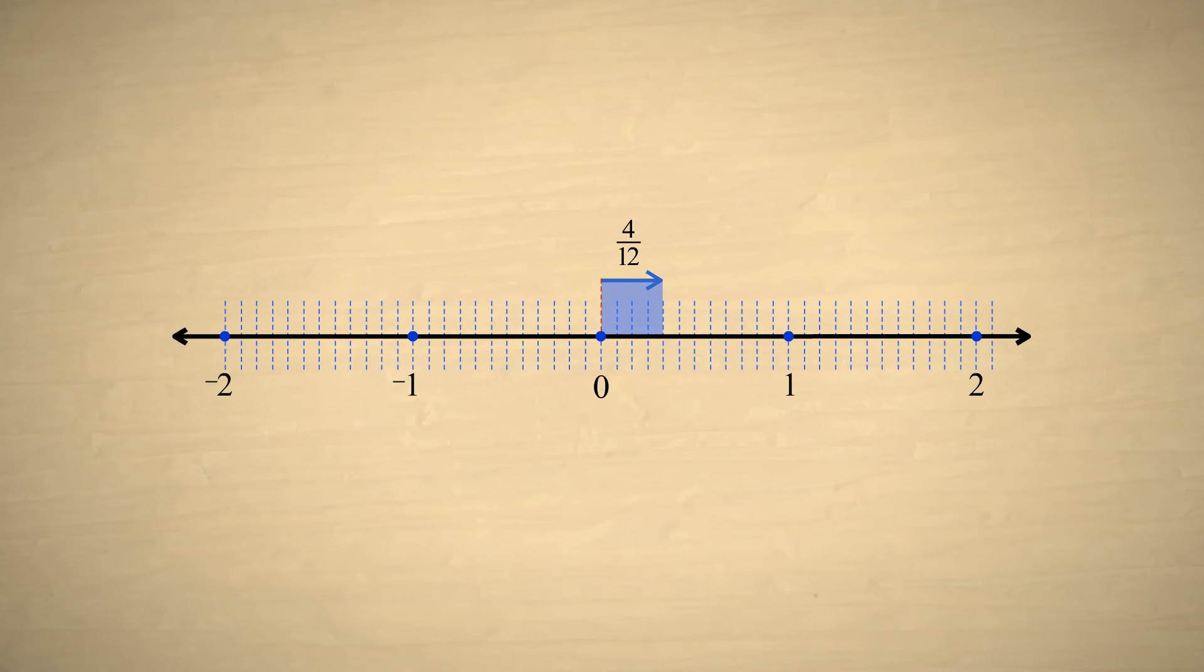But it is also possible to do this process in reverse by dividing the numerator and denominator by the same number. This creates an equivalent fraction with a smaller numerator and denominator. This is called reducing or simplifying the fraction.